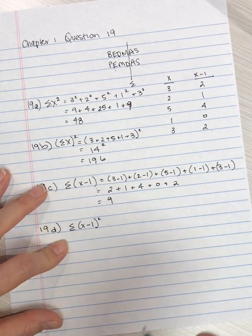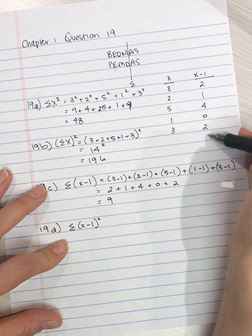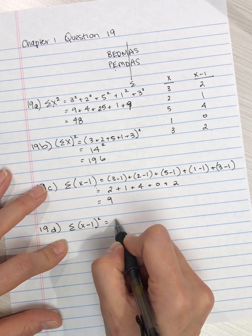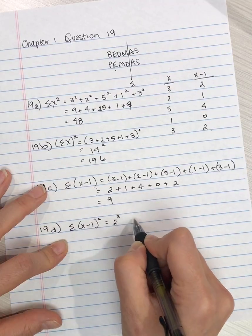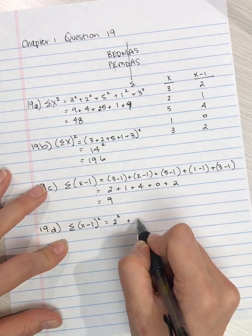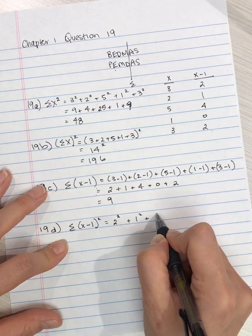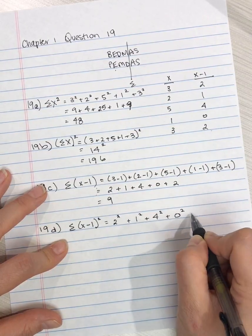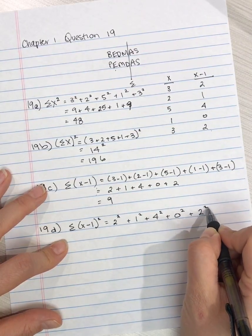So we can use these numbers that we've already calculated up here. We're going to take 2, square it, and then add up all of those values. 1 squared plus 4 squared plus 0 squared plus 2 squared.